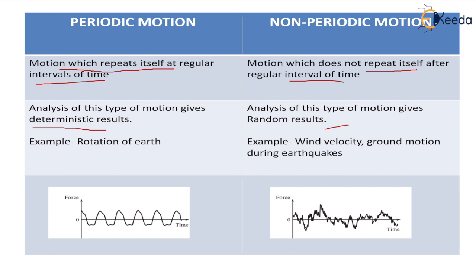For example, if we want to do the analysis of wind velocity, or maybe the motion of the Earth during earthquakes — it may take ages to collect the data and study them, and again we cannot be sure that the results we get are deterministic or not. This type of motion is called non-periodic motion.